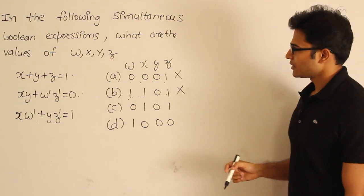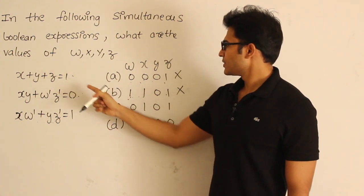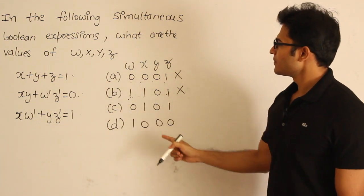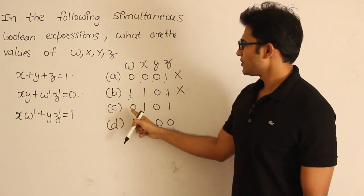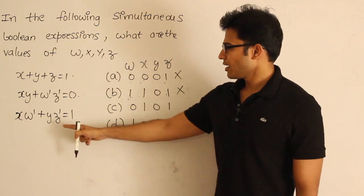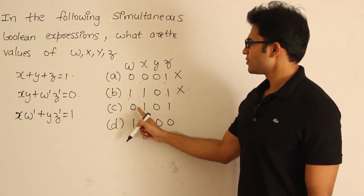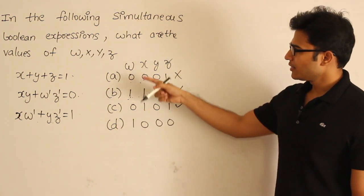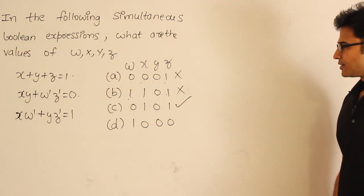Let's check the next candidate. x, y, z: x·y·z gives 1 — satisfying. For the second equation, x·y is 0, w' is 1, and z' is 0 — also satisfying. For the last one, x·w' is 1 — satisfying. Therefore all three equations are satisfied for option c, so c is the answer.